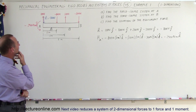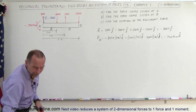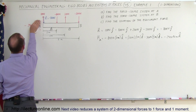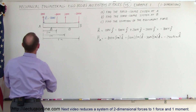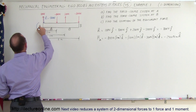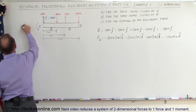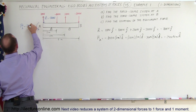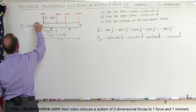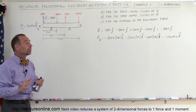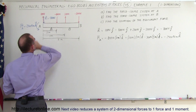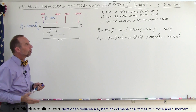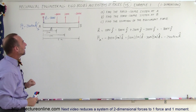So the resultant moment about point A is minus 2500 Newton-meters in the k-direction. We have replaced the four forces with a single force and a moment at point A — this is the force-couple system at A.